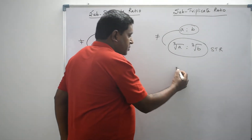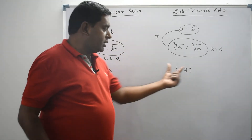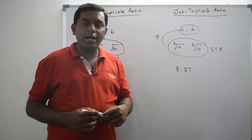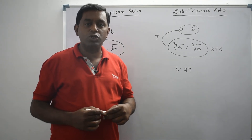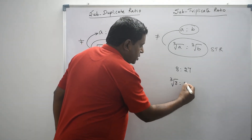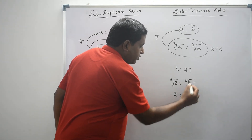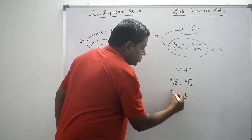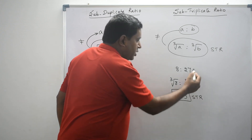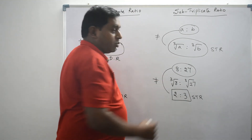Let's look at an example: 8 is to 27. I want to find subtriplicate ratio of 8 is to 27. What I have to do is I have to take cube root for both 8 and 27. So cube root of 8 is to cube root of 27. The value of cube root of 8 is 2, and the value of cube root of 27 is 3. So 2 is to 3 is the subtriplicate ratio of 8 is to 27. These two ratios are not equal.